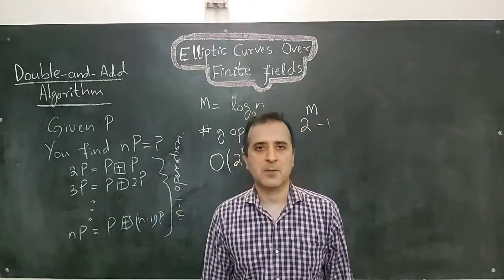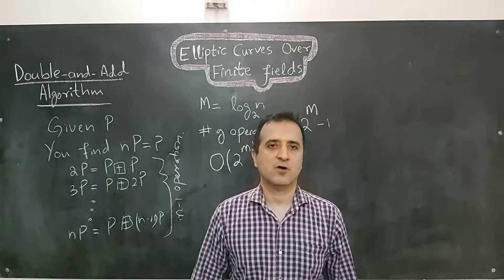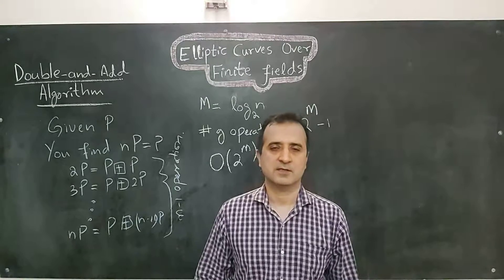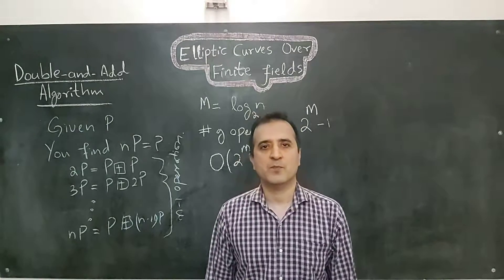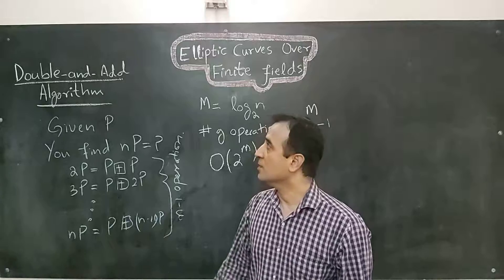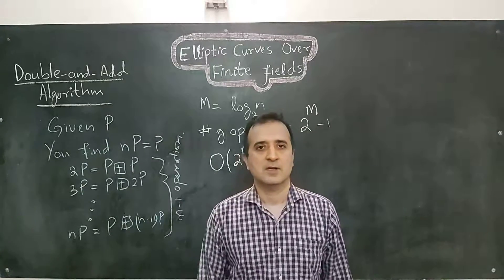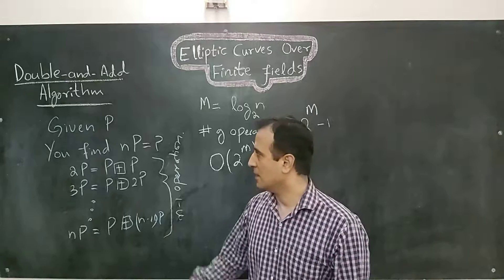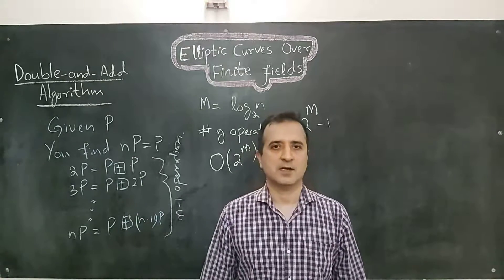And we all know the exponential time complexity is not good because the growth rate is very fast. But luckily, we can do better than that. The double and add algorithm computes nP in polynomial time.